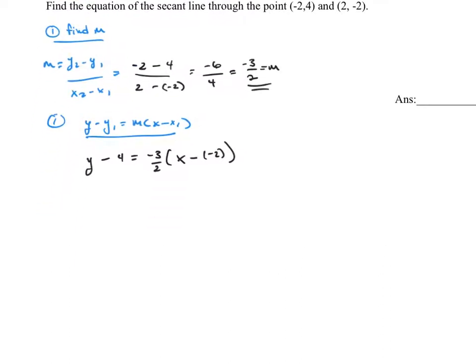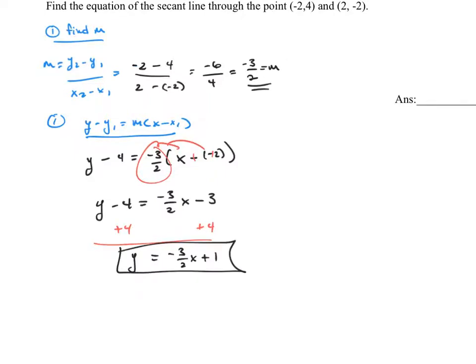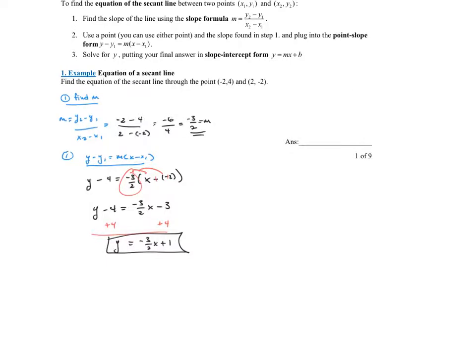I'm going to remember that when I subtract a negative, that's the same thing as adding a positive. And then I'm going to distribute that negative 3 halves to both of those terms. So I have y minus 4 equals negative 3 halves x. And then I have negative 3 halves times a positive 2. Put that into your calculator and simplify it. You end up with a negative 3. So right now I have y minus 4 equals negative 3 halves x minus 3. I'm going to add 4 to both sides. When I add 4 to both sides, I end up with the equation of the line y equals negative 3 halves x plus 1. So that would be the equation of what's called the secant line, the line that goes through those two points.